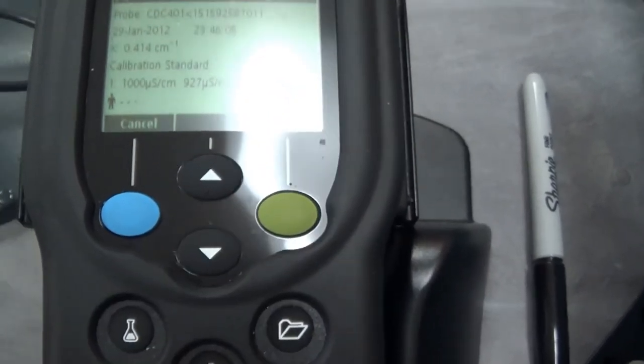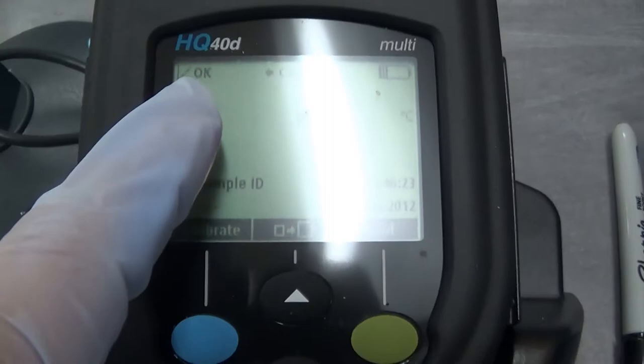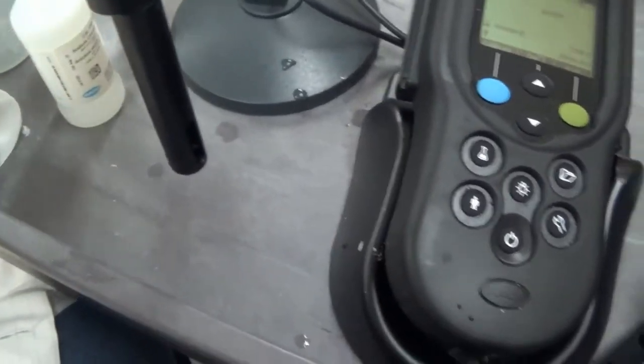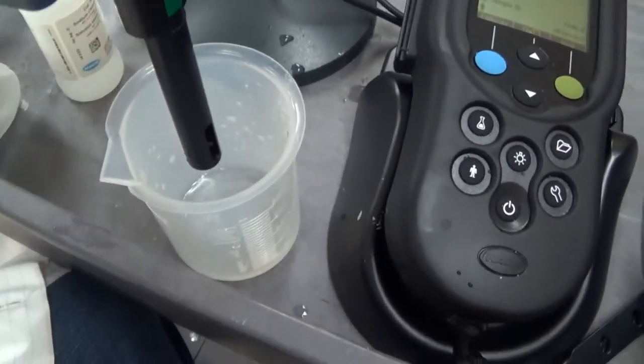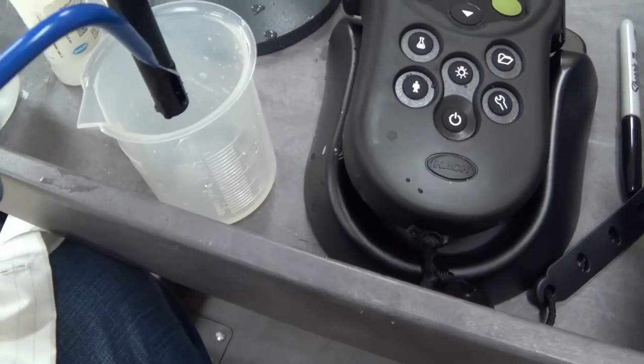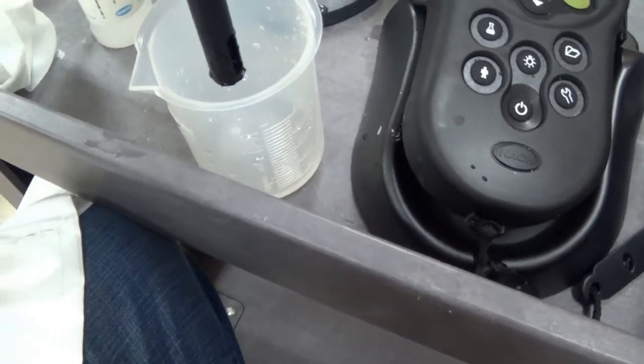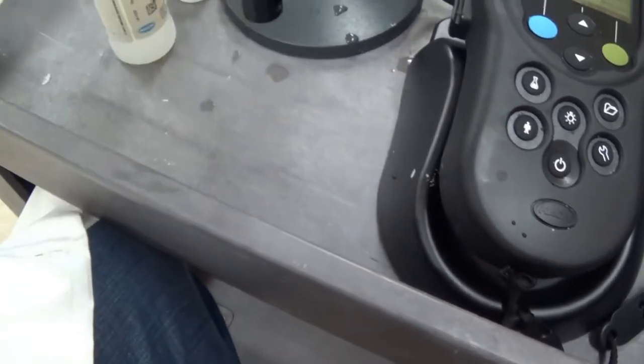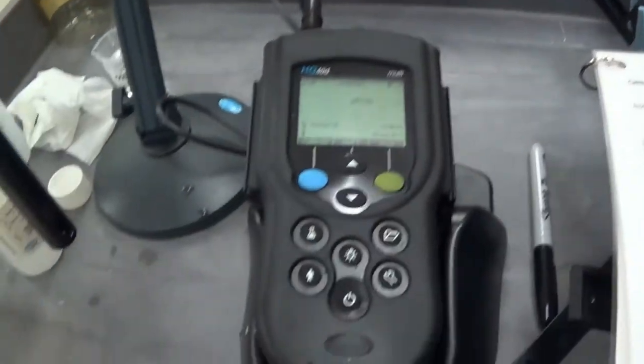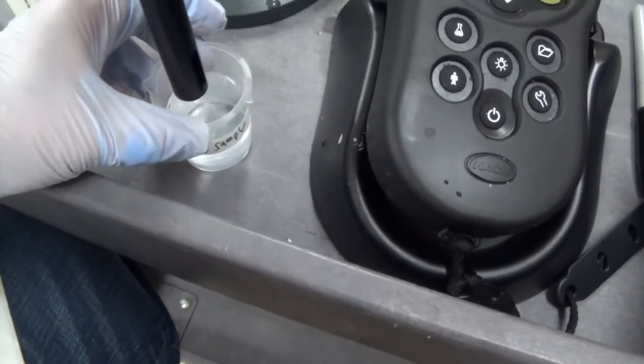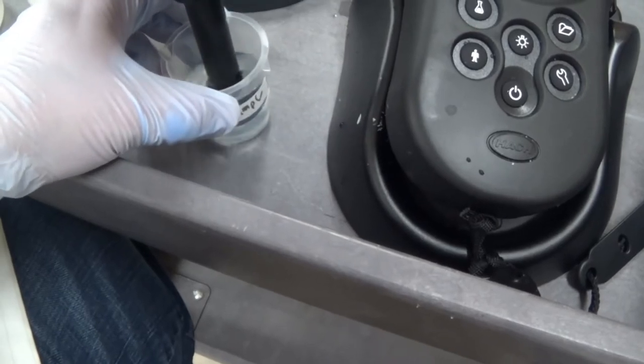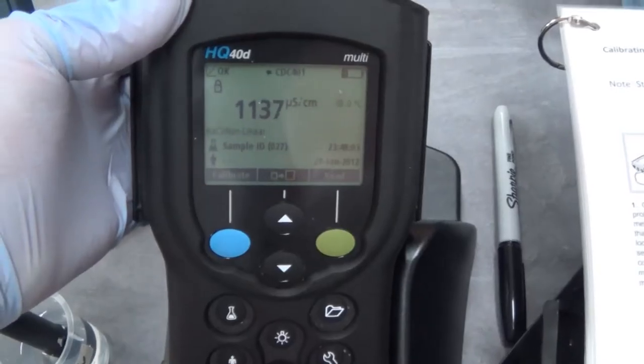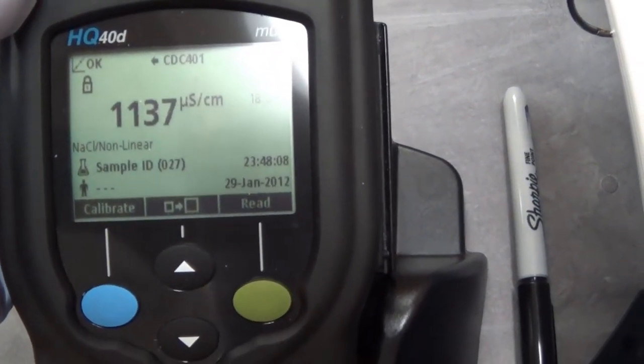I am going to take it out of my 1,000 standard. Rinse, rinse, rinse. Dry. Get rid of that, get my test sample. Put it in my well water from UWGB. Let's hit read. It is stabilizing. Finished and it is stabilized. This is our reading here from our well water from UWGB.